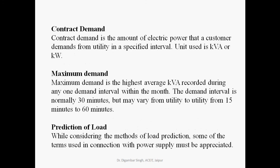The next topic is contract demand. Contract demand is the amount of electric power that a customer demands from the utility in a specified interval, measured in kVA or kilowatt. The maximum demand interval is 15 minutes at the national level, but at the local level it can be 30 minutes or between 15 to 60 minutes at different distribution centers. Maximum demand is the highest average kVA recorded during any one interval within the month.